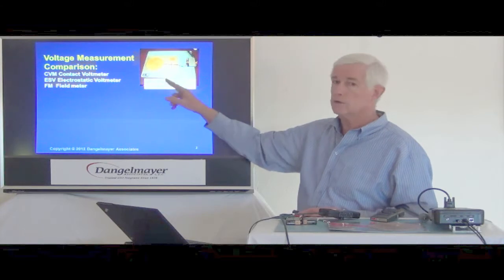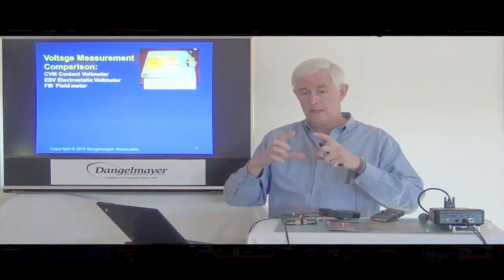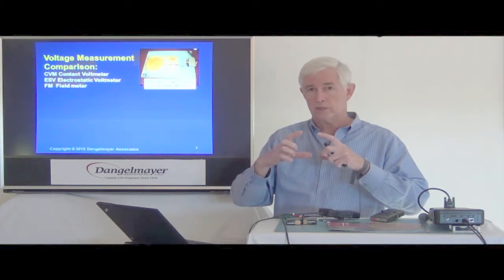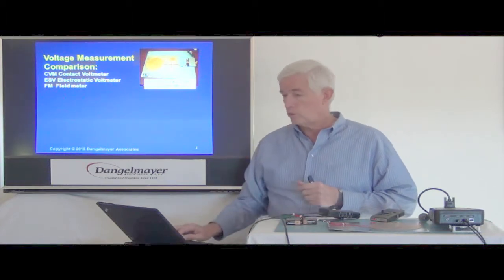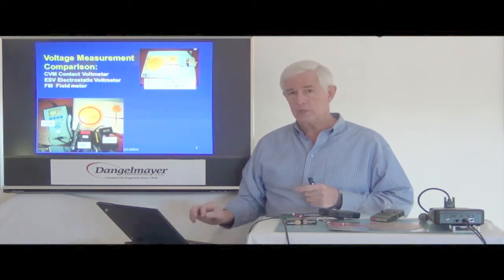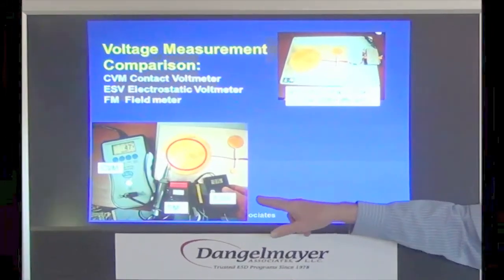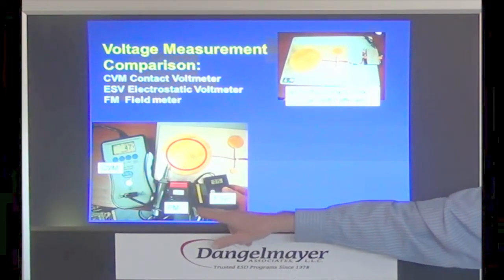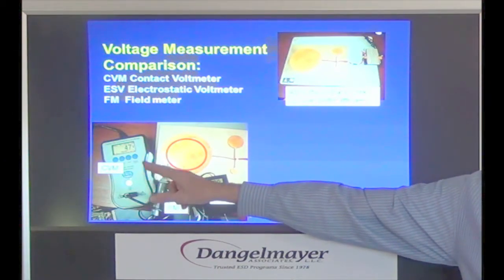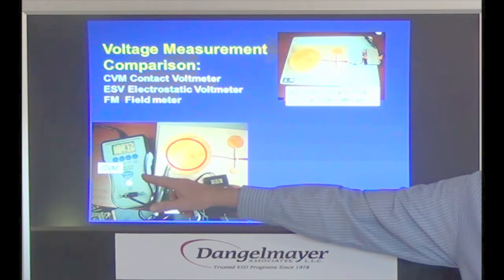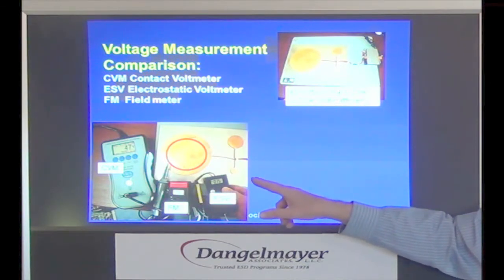The silver area is a ground plane underneath it. So again, talking about the field of view, what will happen is we'll get distorted measurements if the field of view is too large. Let's take a look at the setup. Here are the instruments that we're going to use: the electrostatic voltmeter, the field meter, and a contact voltmeter, which will give us a contact precise measurement of the voltage. You'll see the variation that we're going to get momentarily.